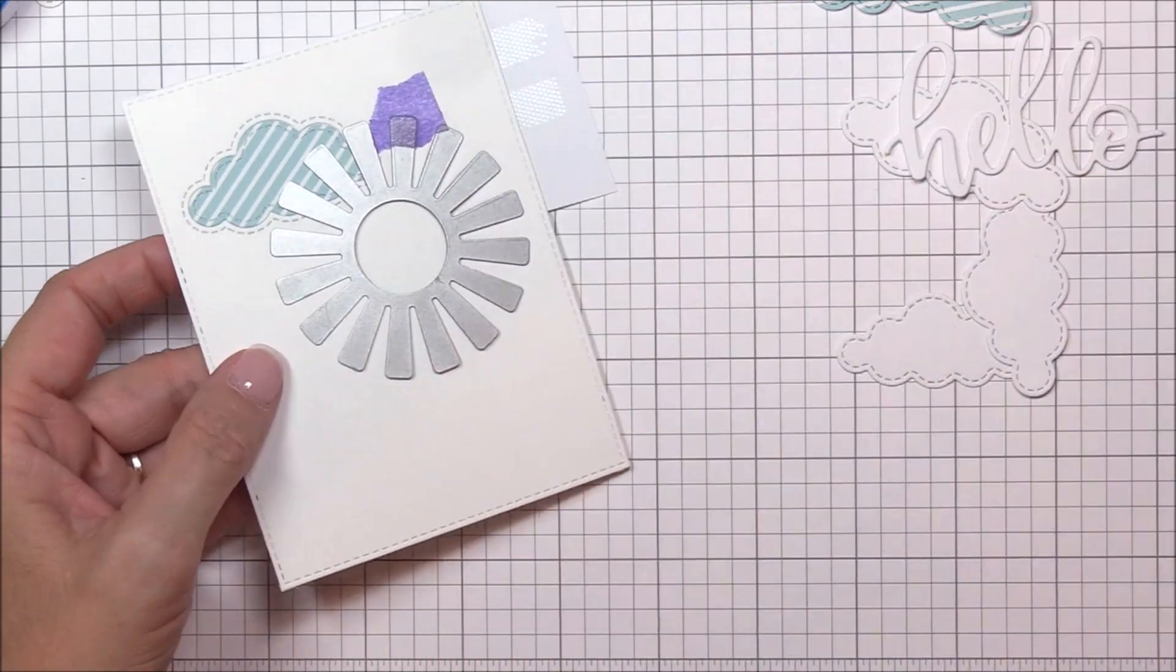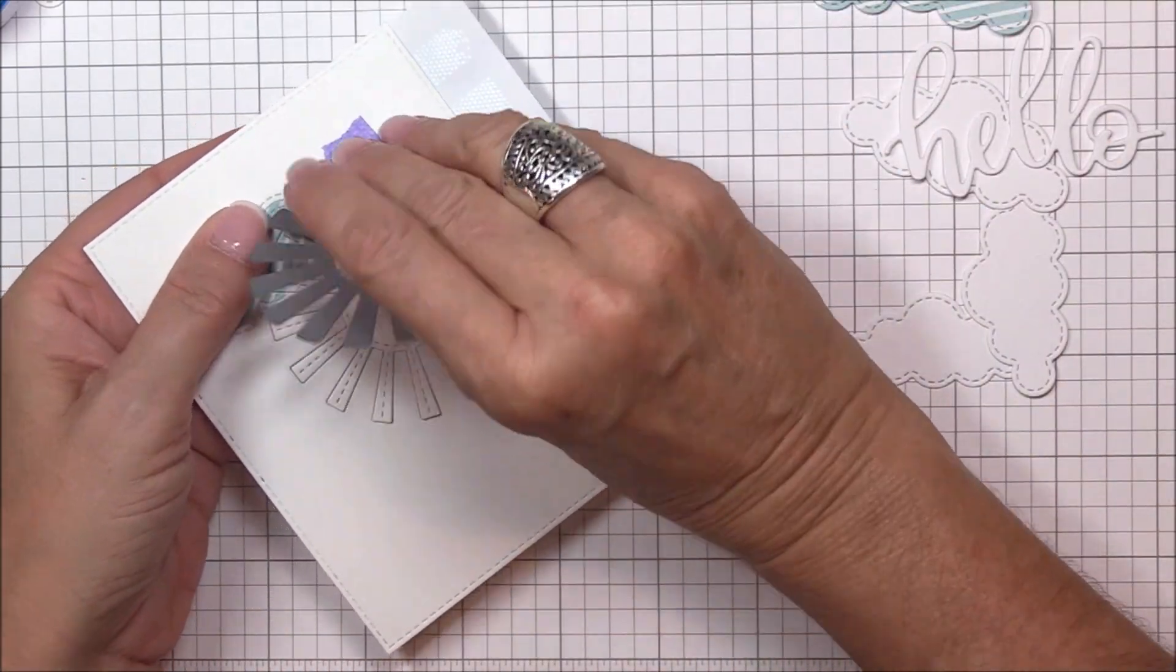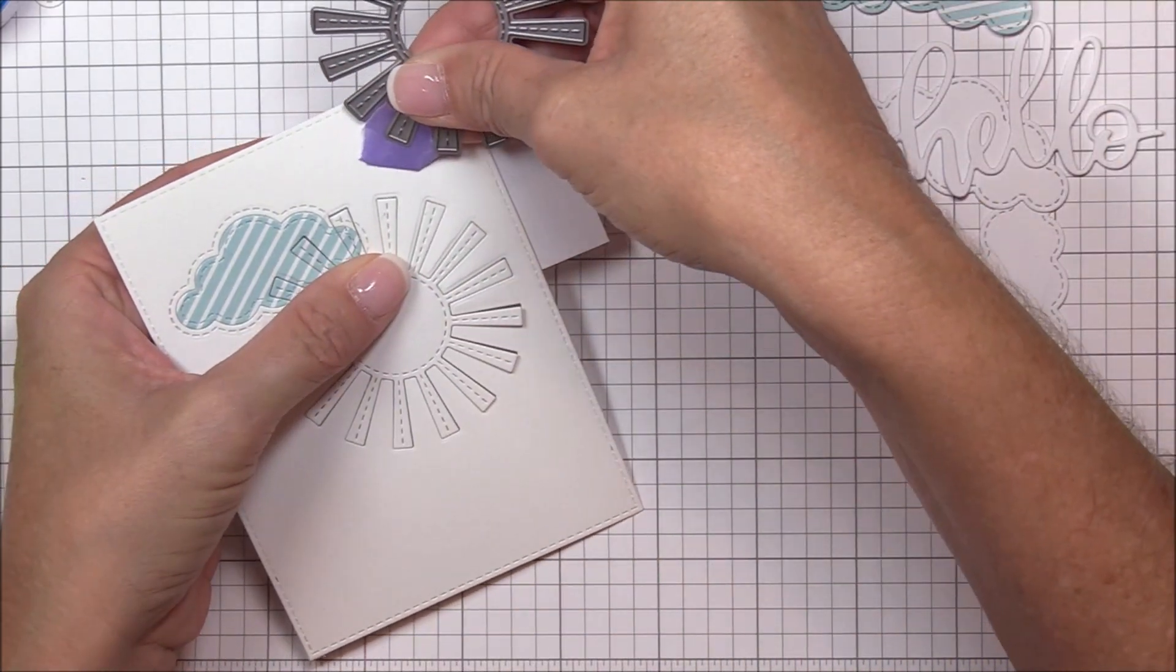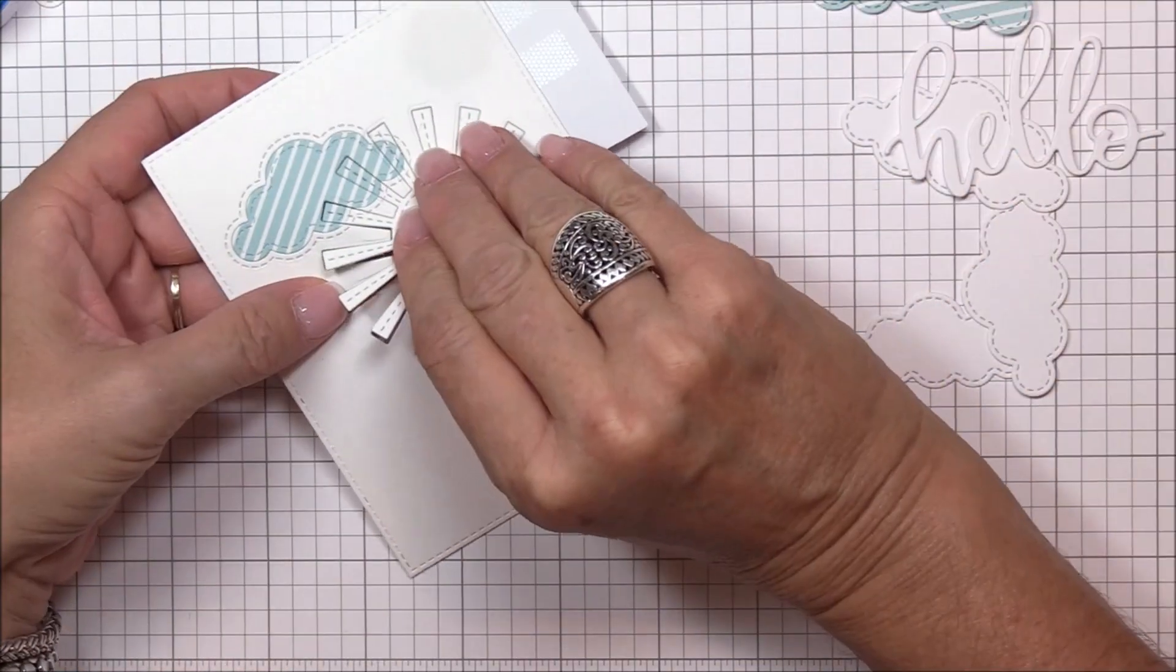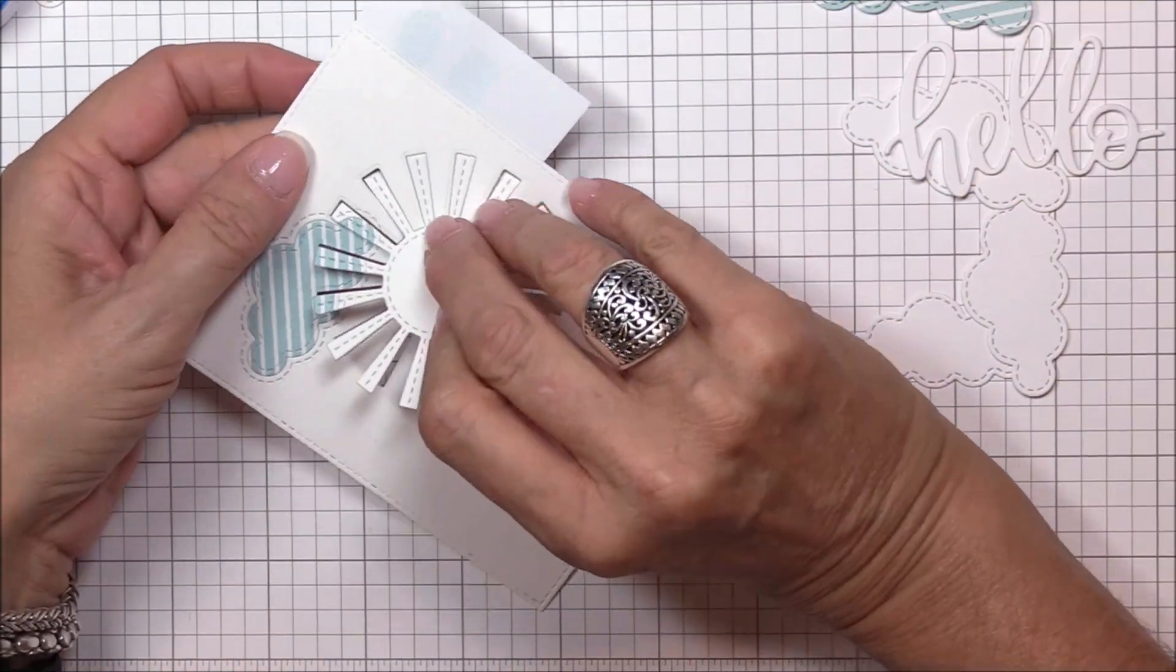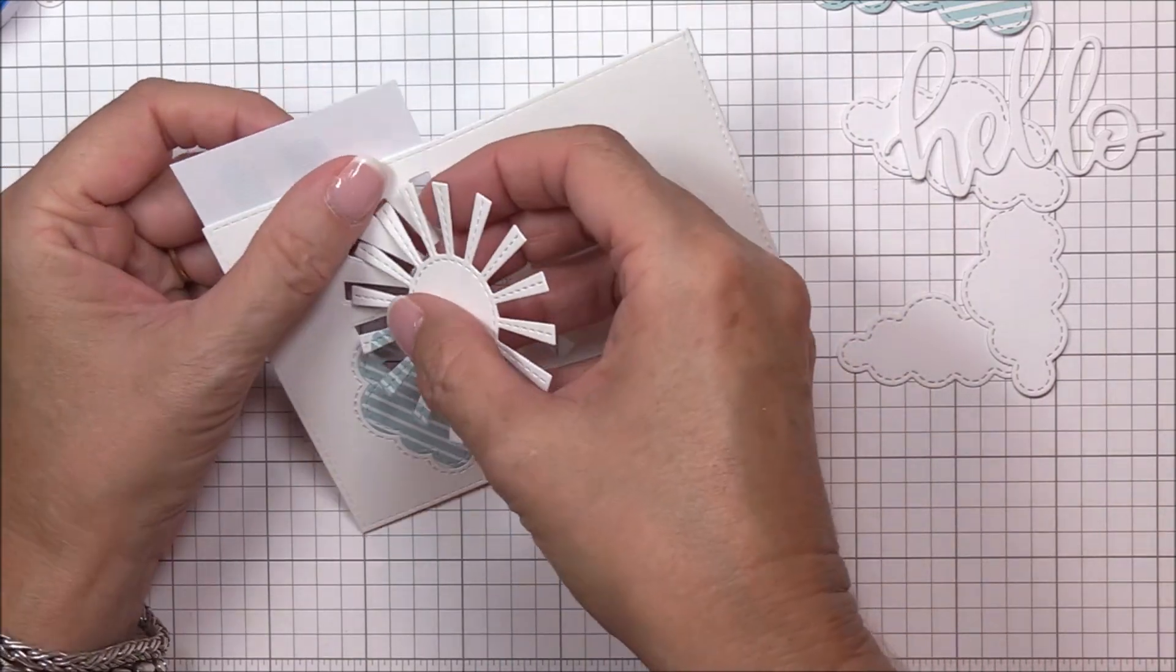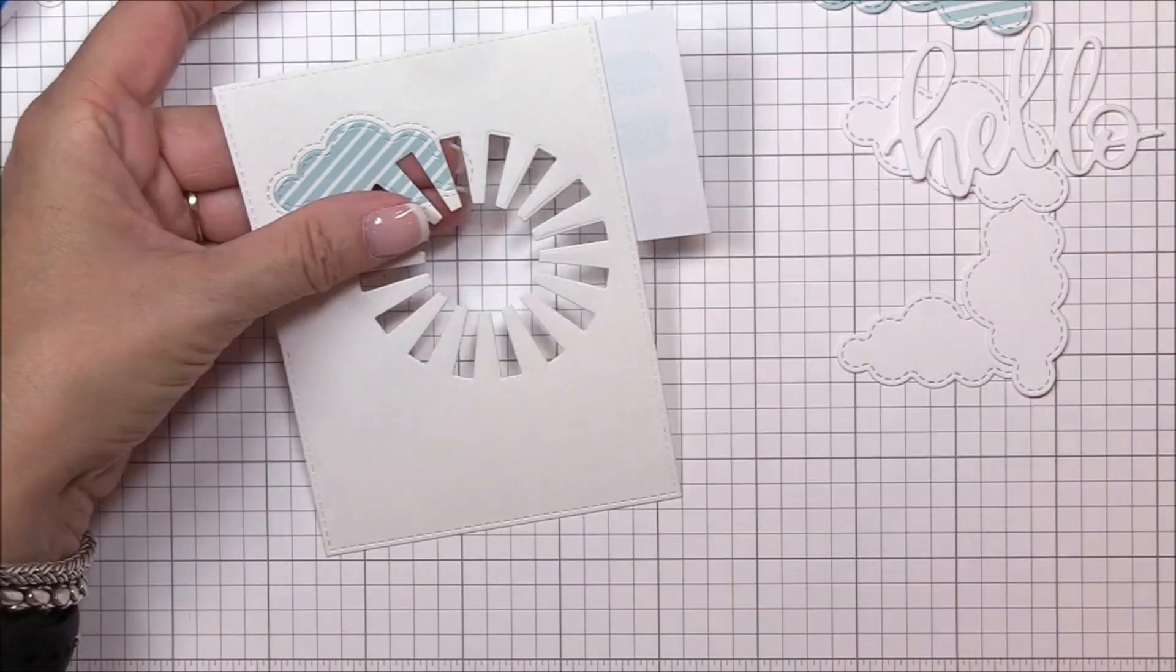The next die I need to cut is the sunshine die. I lay that on top of the design where I want it and die cut it off camera. I'll remove the negative of the die cut and adhere more printer paper and tape runner behind it, then adhere the yellow polka dot sunshine in its place.